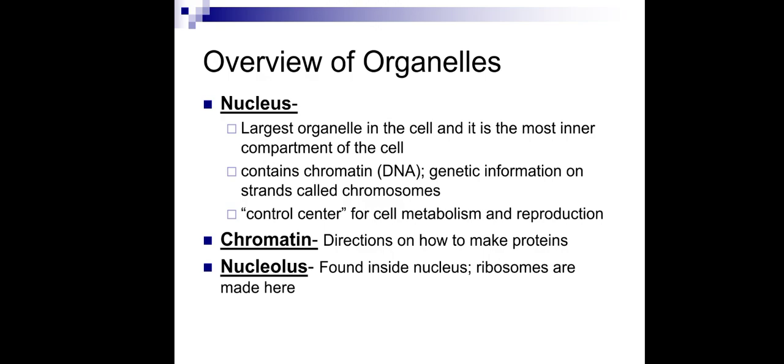Inside the nucleus there is a thread-like structure called chromatin. In the dividing phase of the cell cycle, it makes chromosomes. Chromatin directs how to make a protein by the central dogma — the process of DNA to RNA, and RNA to protein. Inside the nucleus there is another round-shaped organelle called the nucleolus, which makes ribosomes.